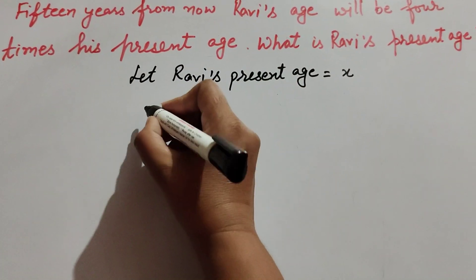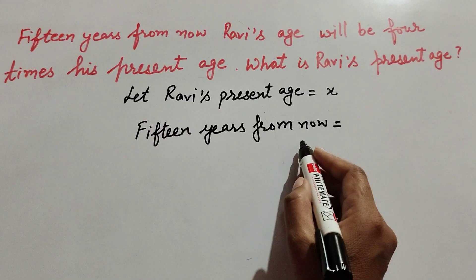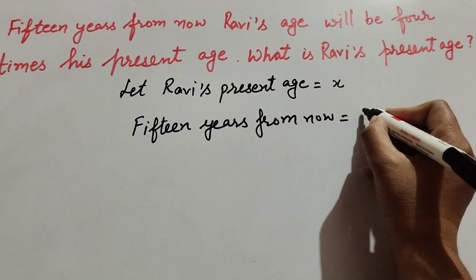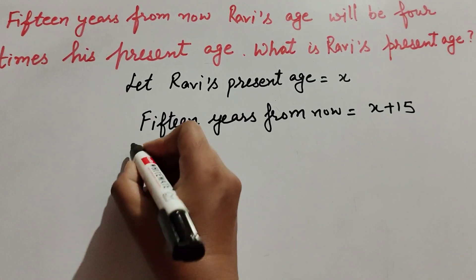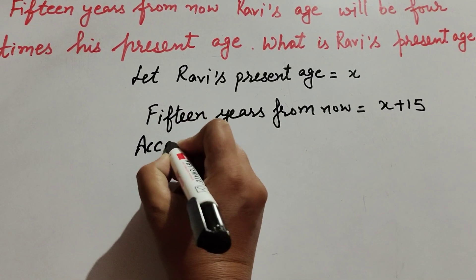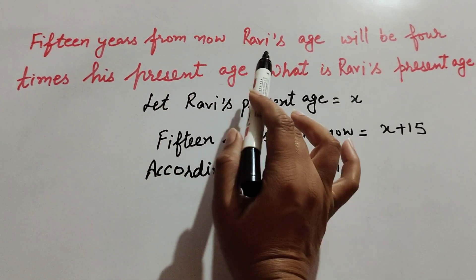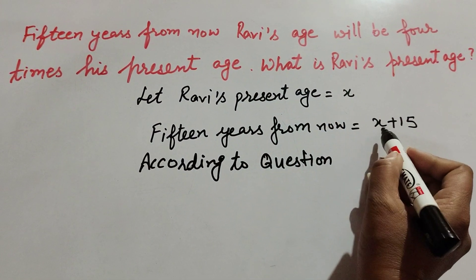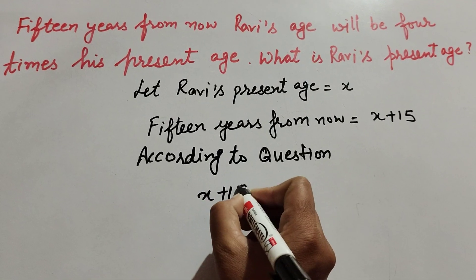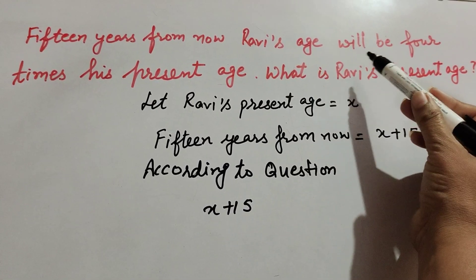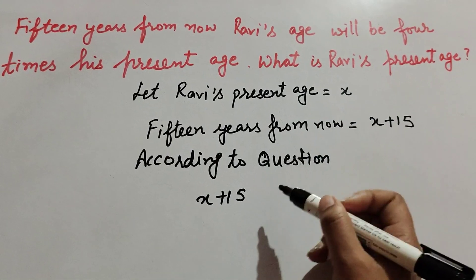15 years from now, Ravi's age will be x plus 15. According to the question, 15 years from now Ravi's age will be 4 times his present age. So x plus 15 equals 4 times his present age.